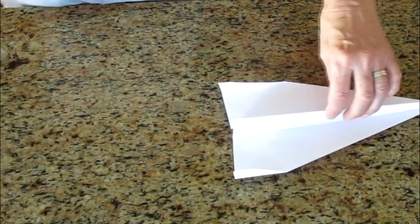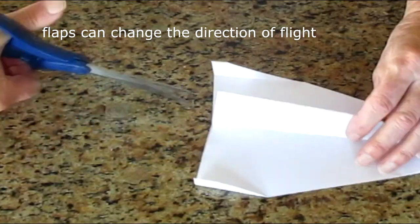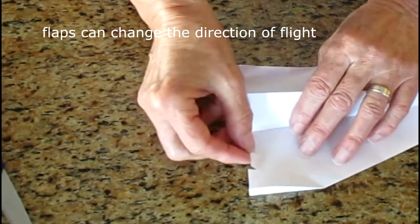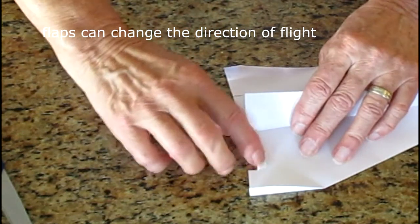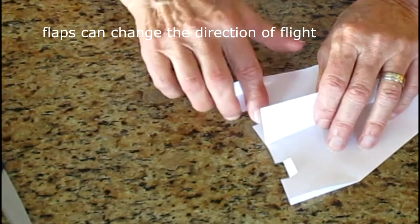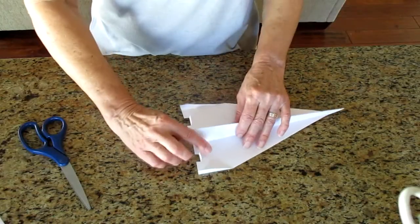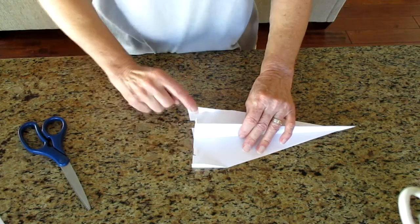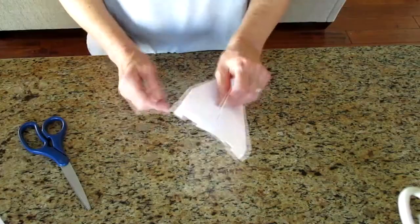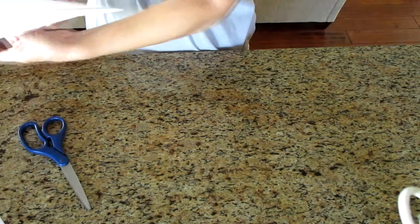You can also take a scissor and cut a little flap right here and fold that flap down. That's kind of working like the brakes on your airplane. You can adjust those as you're flying your airplane and see what they do. If you have one flap down and the other one up standing up like this the airplane may fly around in a curve.